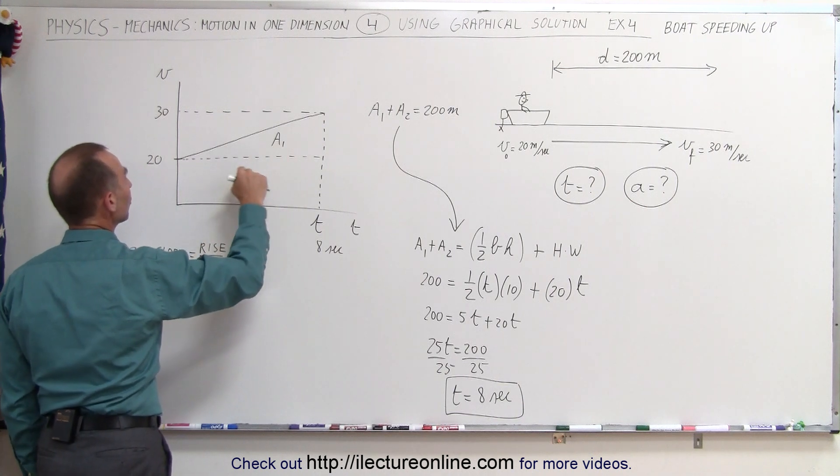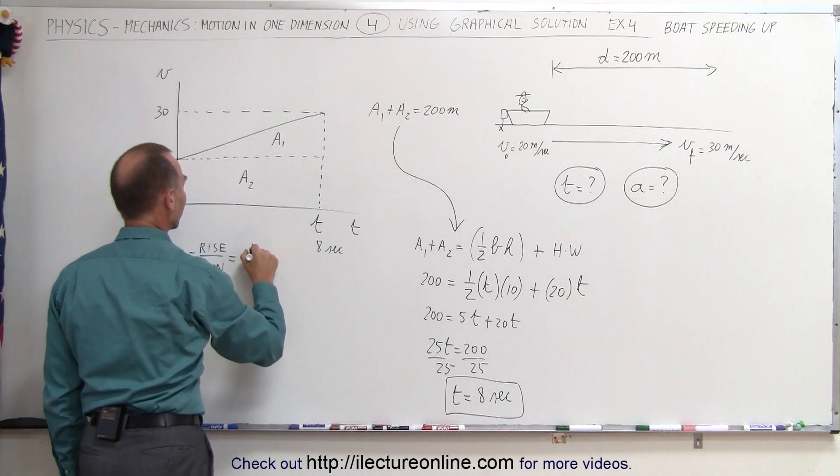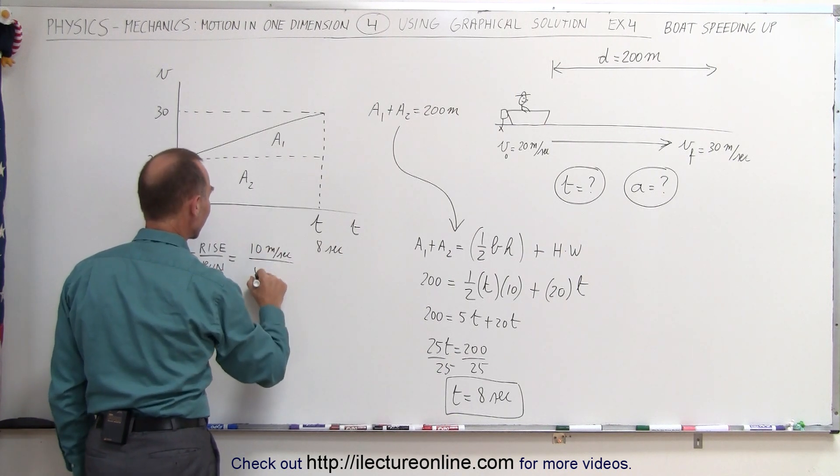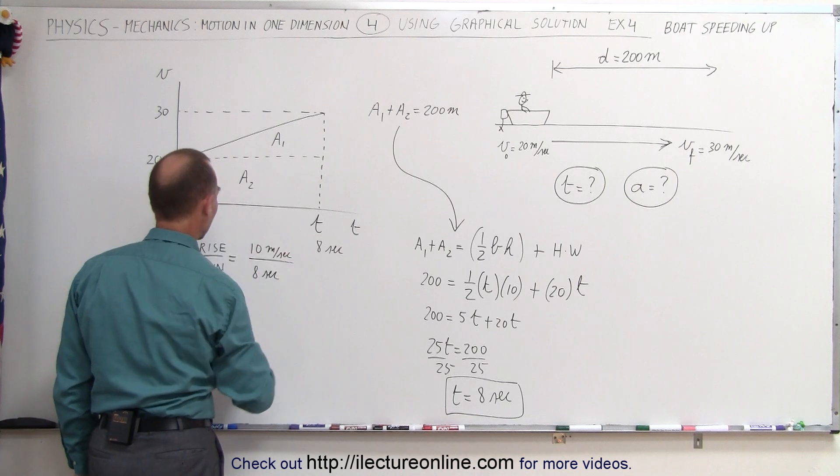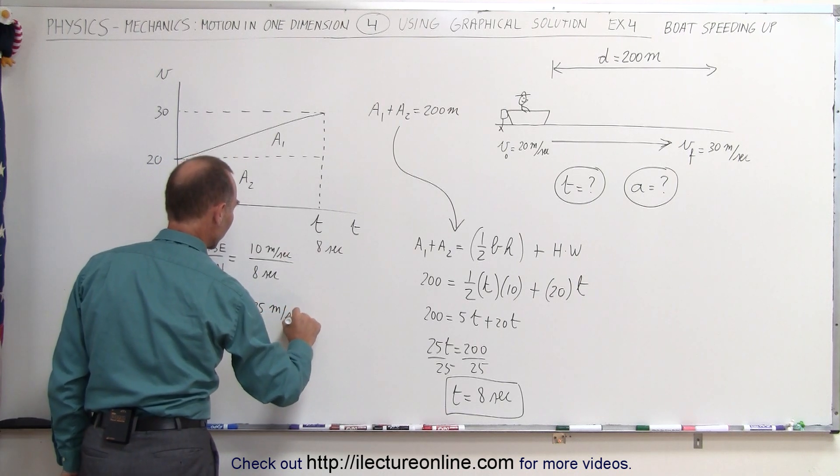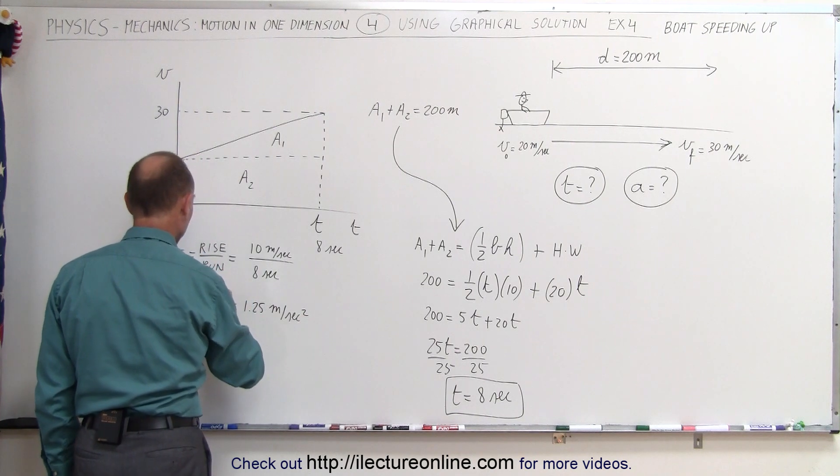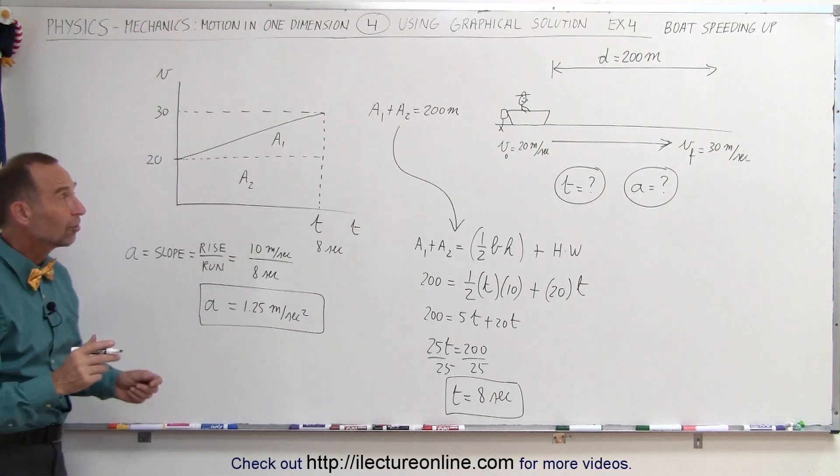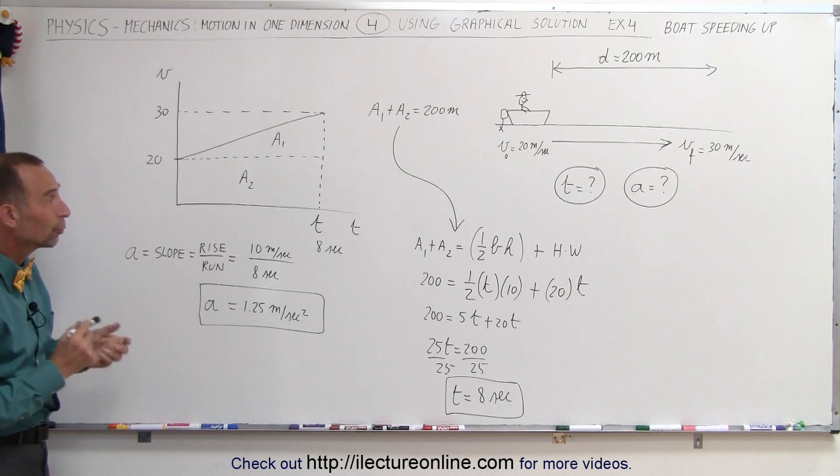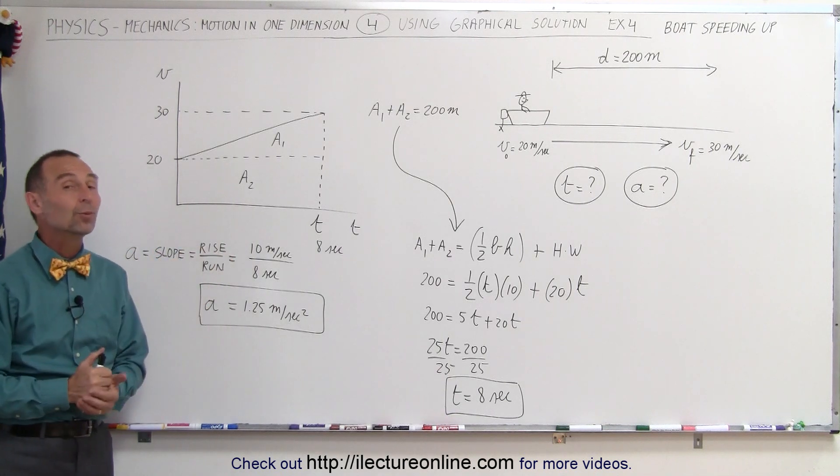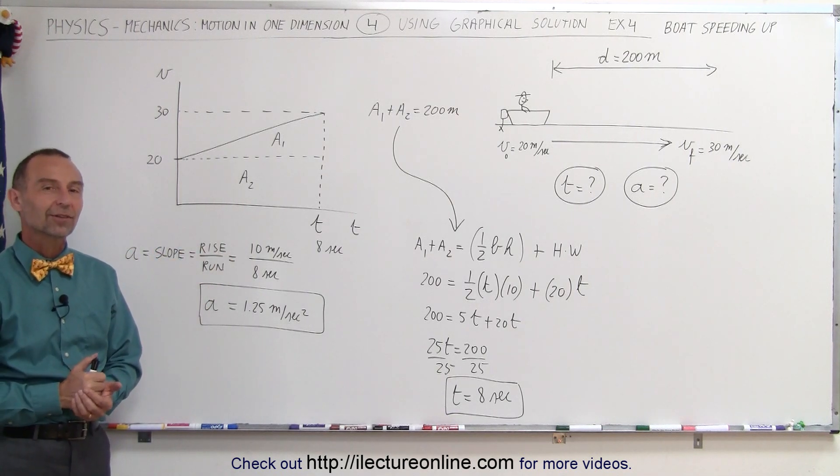And the rise in this case would be from 20 to 30 so that's a rise of 10 meters per second divided by the run which would be a period of 8 seconds. And 10 divided by 8 is equal to 1.25 meters per second squared which would be the acceleration of the boat during that 200 meter distance in which the boat accelerated from 20 to 30 meters per second. And so using graphical techniques can sometimes be really handy in solving problems like this.